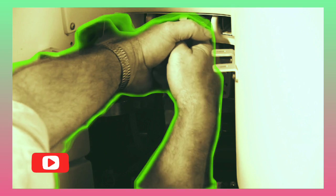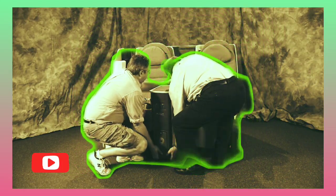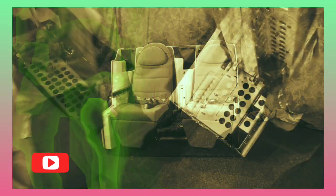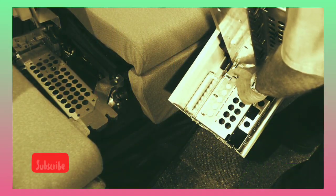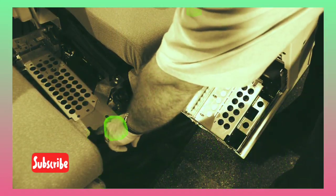At this point, the center console is ready to be removed. Pull the unit six inches forward and lift up to disengage it from the seat. You can see where the console is connected with these two slots.